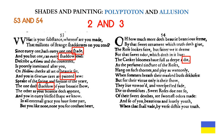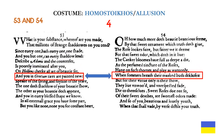Line 8 in sonnet 53 reads: and you in Grecian tires are painted new — a direct reference to actors on stage. Actors would go behind the curtain to what was called a tiring room, in which they changed their costume or attire. And of course when they did that, they would be painted new — because they'd be in a different costume.